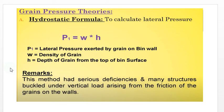Grain pressure theory — the hydrostatic formula calculates the lateral pressure: P1 equals W times H, where P1 is the lateral pressure exerted by grain on the bin wall, W is the density of grain, and H is the depth of grain from the top of the bin surface. A serious deficiency of this method is that many bulk structures collapsed under vertical load arising from friction of grain on the walls.